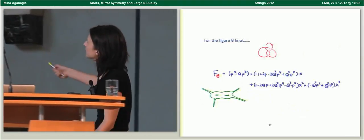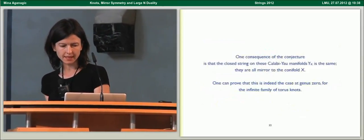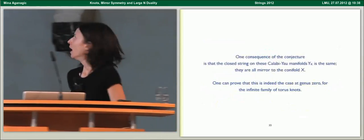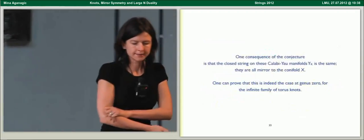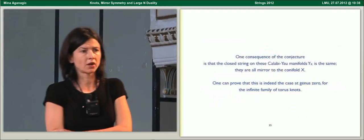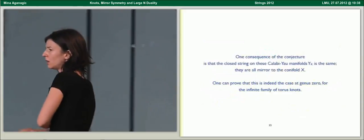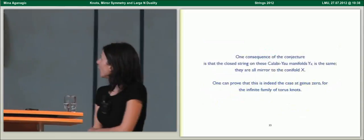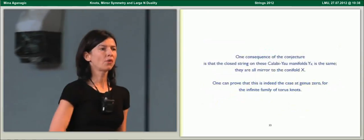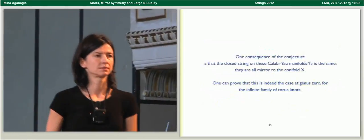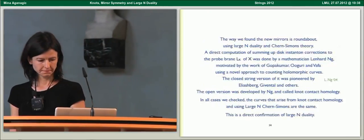The Calabi-Yau is built on this Riemann surface. Of course, the whole mirror is three complex dimensional, but this Riemann surface is the guts of it. One consequence of this generalized mirror conjecture is that closed topological string on all of these is exactly the same as that of the conifold. One can prove this for genus 0 topological string amplitudes for an infinite class of torus knots.